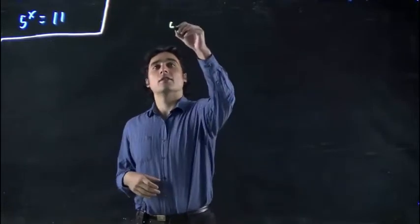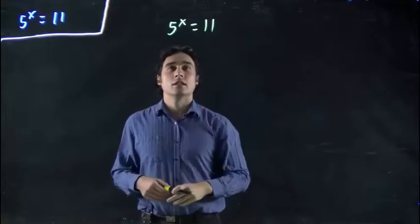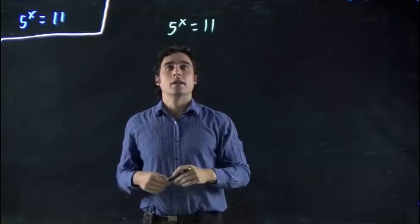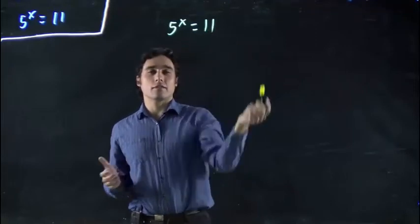What do we have? 5 to the x equals 11. And we've been saying if we can put them to the same base, the exponents must be the same. But there's no way to relate 11 and 5.